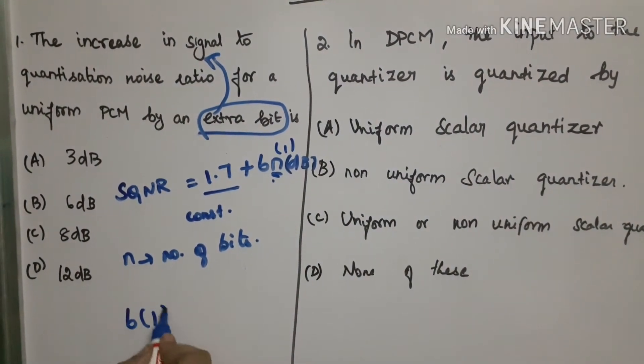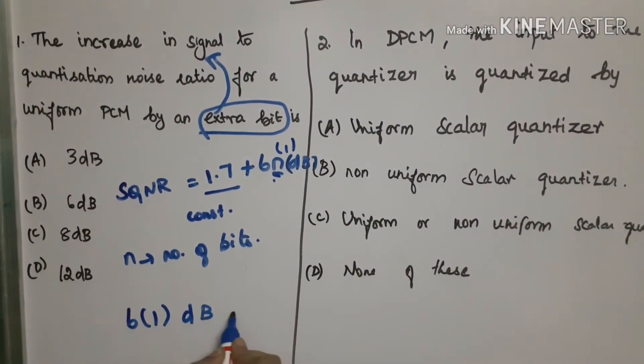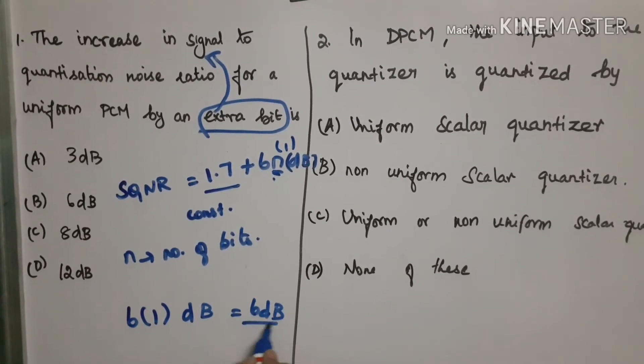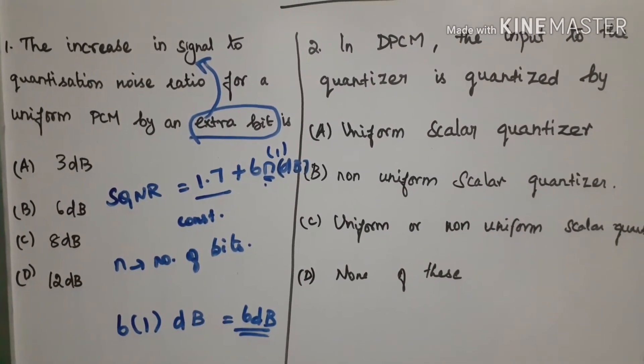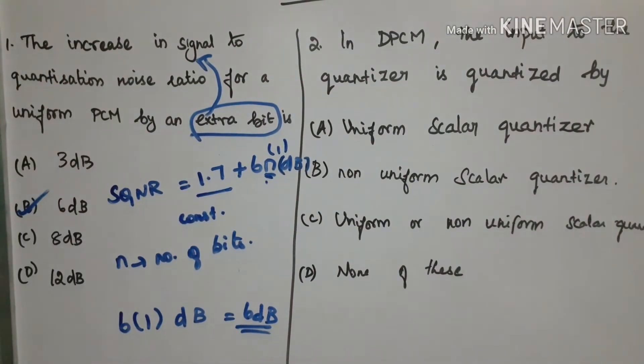So 6 into 1 dB. 6 dB is our answer. Option B is the correct answer.